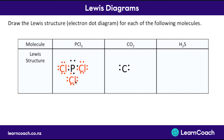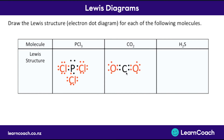Now let's look at CO2. Carbon has four outer electrons and oxygen each has six. So carbon needs to gain an extra two electrons from each of these oxygens, and each oxygen needs to share two electrons with the carbon, so that they both get up to eight electrons each. We can draw CO2 like this with double bonds on each side.